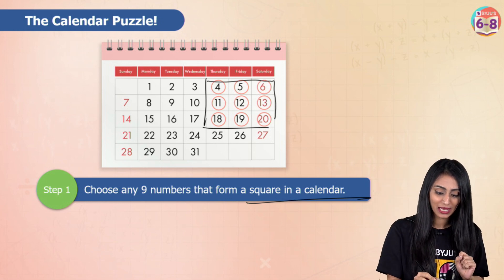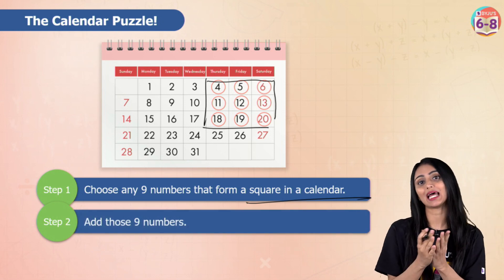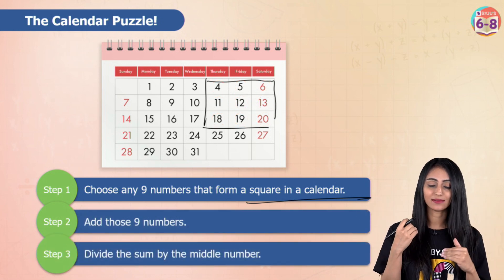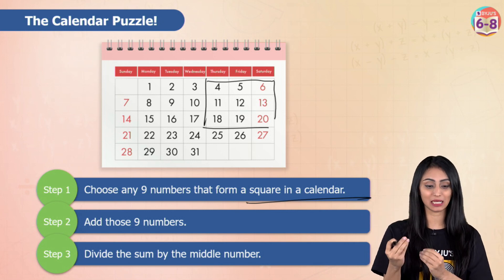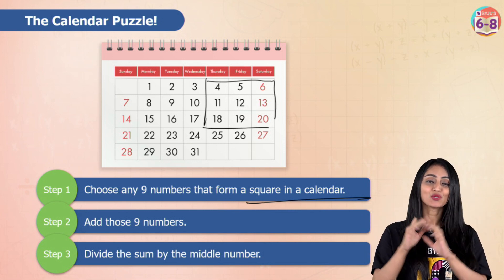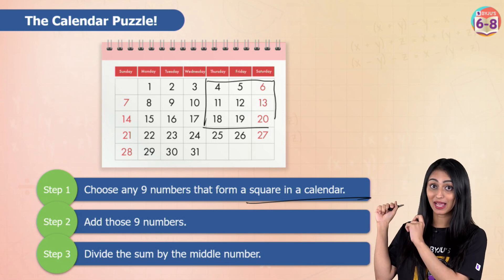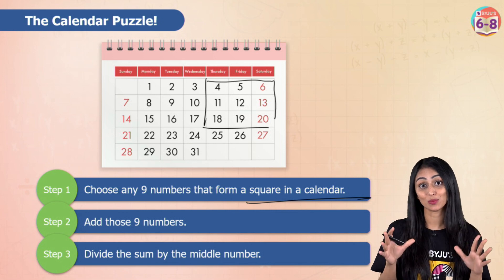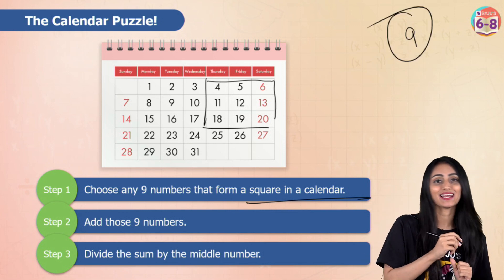You can think of them in your mind as well. Then what you have to do is add those 9 numbers. Once you add them up, you have to divide the sum — whatever sum you get — by the middle number. So whatever numbers you have thought of and whatever numbers I have chosen here, the answer in every case is going to be the same. I'm sure that your answer must be 9.